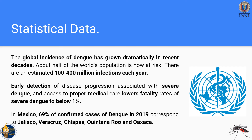It is really important to get rapid access to proper medical care, because it lowers the fatality rates of severe dengue significantly. Local data shows that 69 percent of confirmed dengue cases in 2019 in Mexico correspond to Jalisco, Veracruz, Chiapas, Quintana Roo, and Oaxaca.